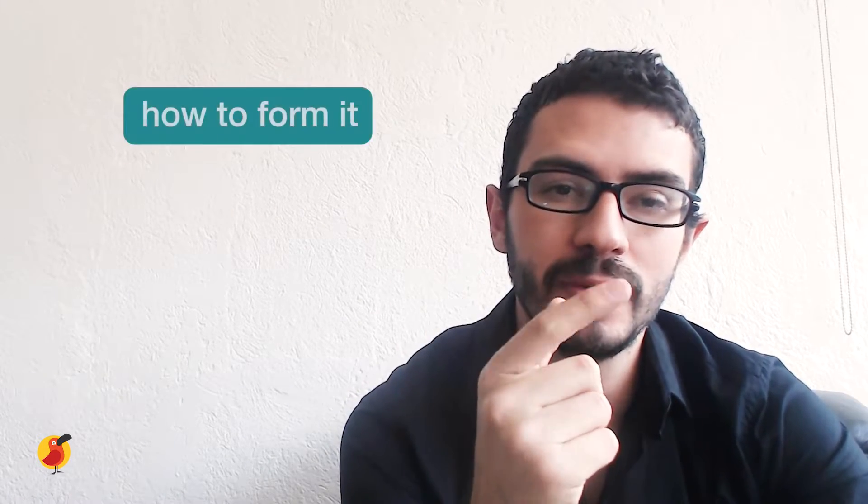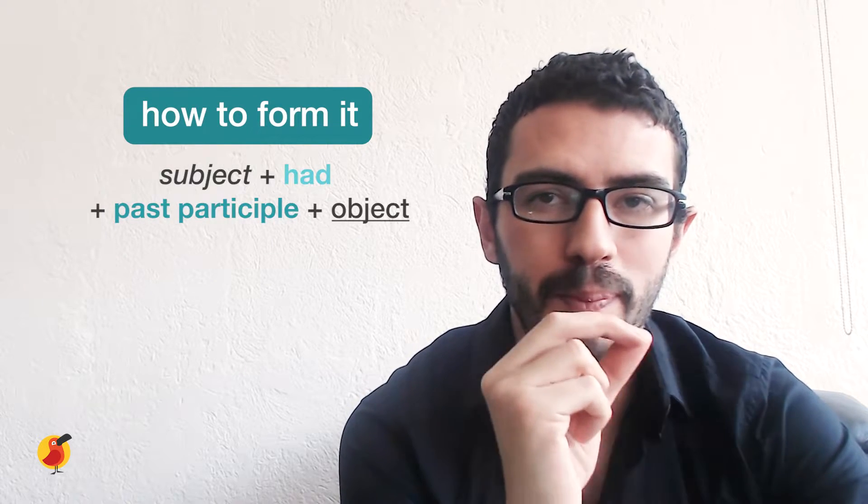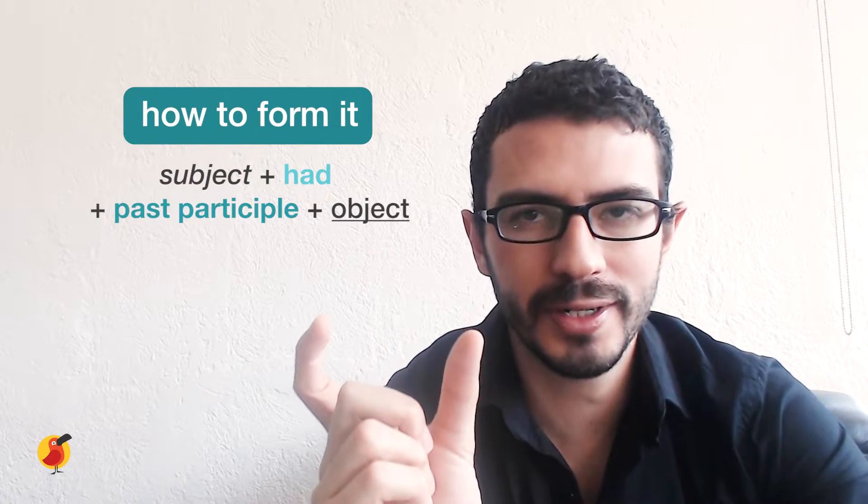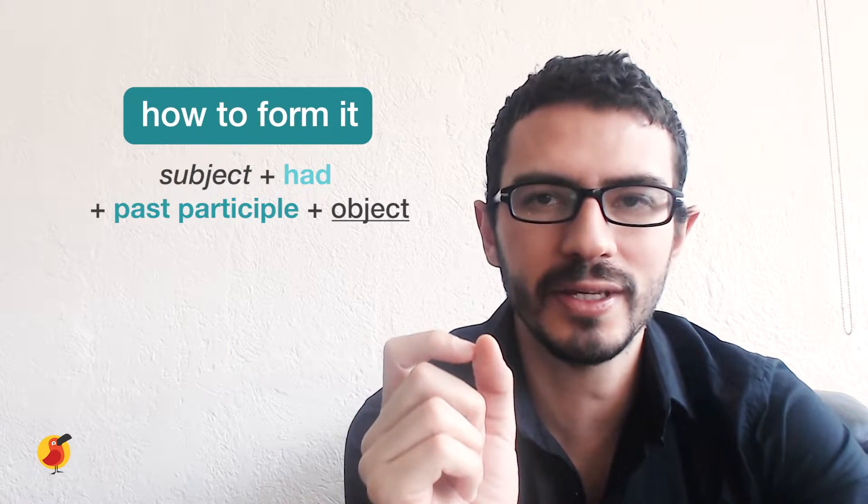So now we're going to see how the past perfect is built. First, you need a subject plus had plus the past participle plus an object. That is the basic formula.